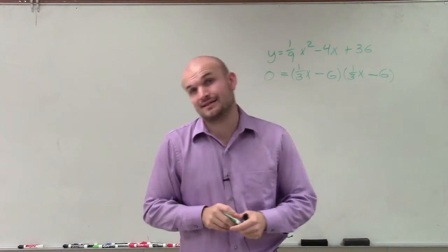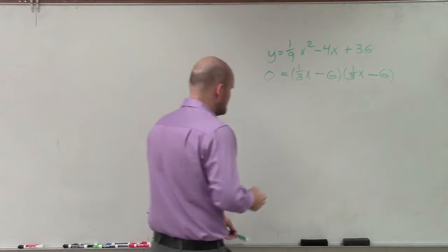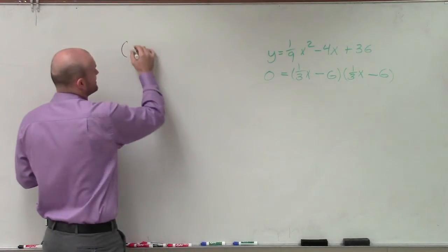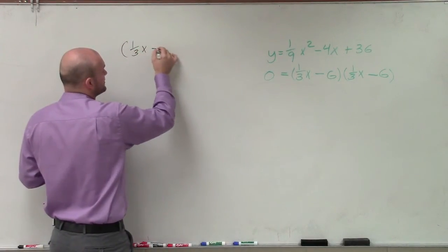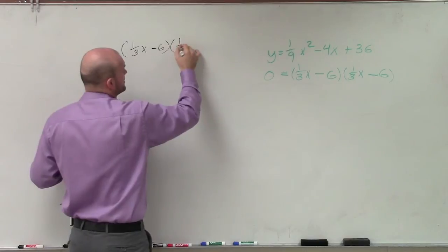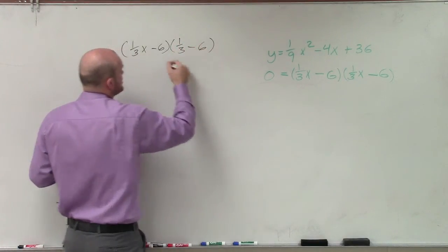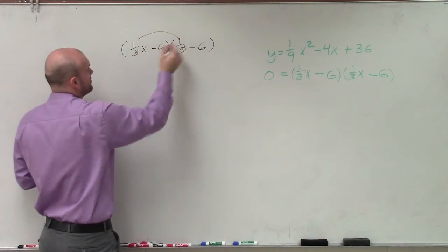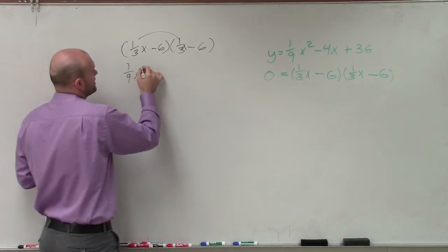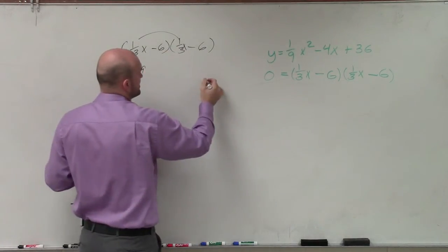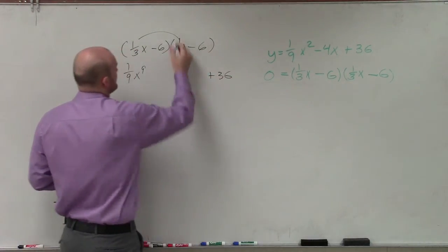Now, before I say I got this correct, let's actually multiply this just to make sure that is the correct factored version. So if I apply the distributive property here, we know that's going to be (1/9)x squared, and that's going to be a positive 36.